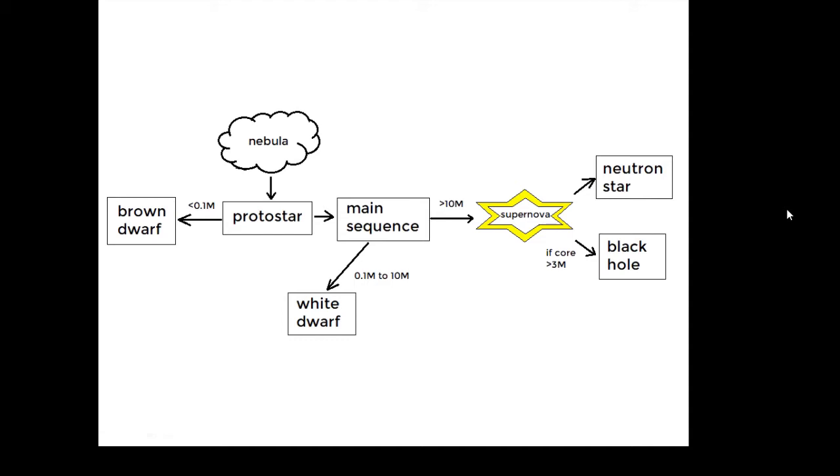If the mass of the star is greater than 10M, which is typical for a type O, B, A star, then when it dies it will become a supernova. It will become a supergiant and then this will collapse and explode as a supernova.